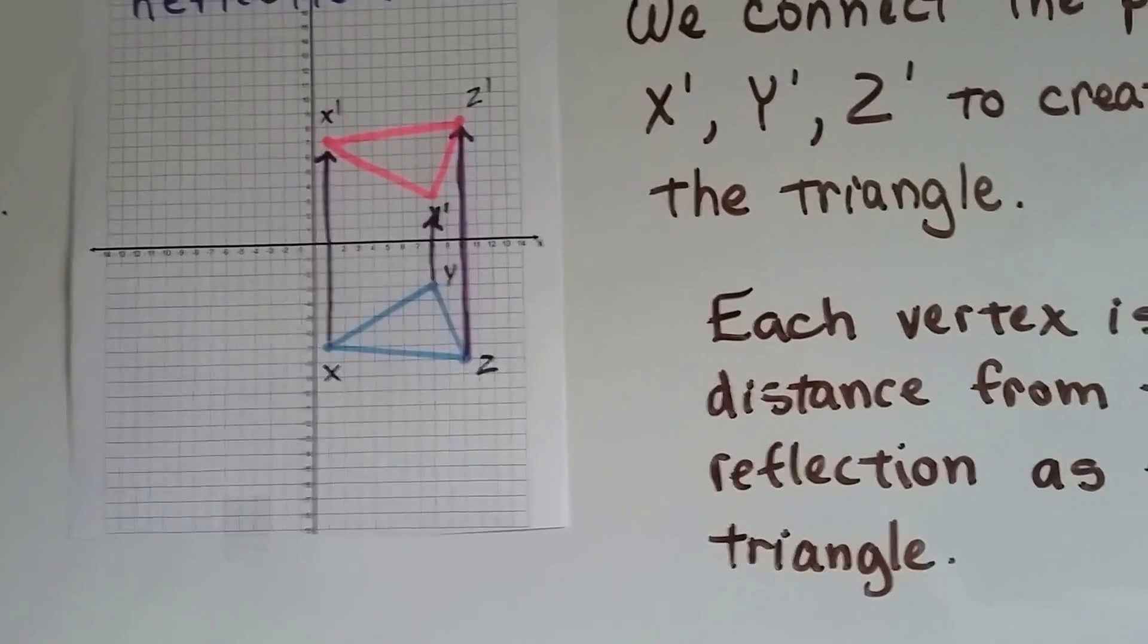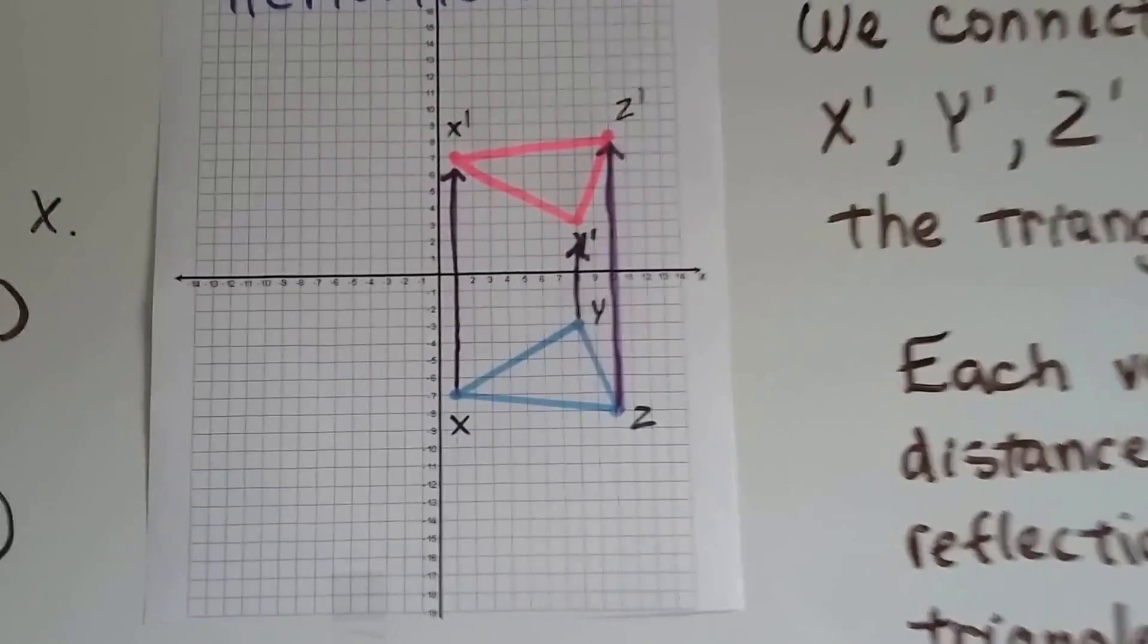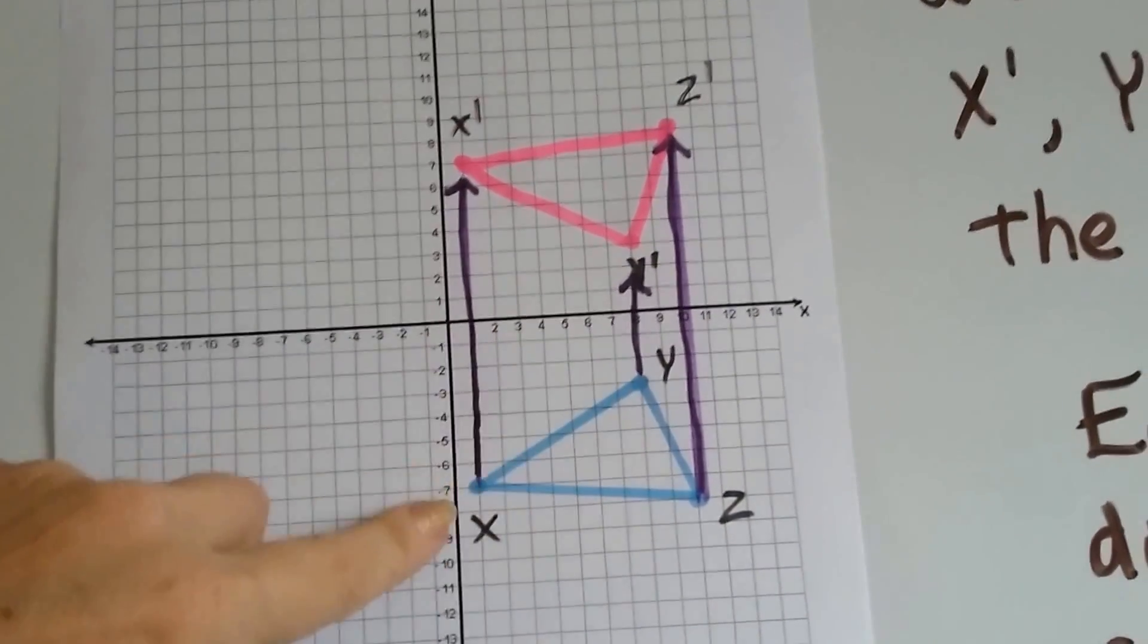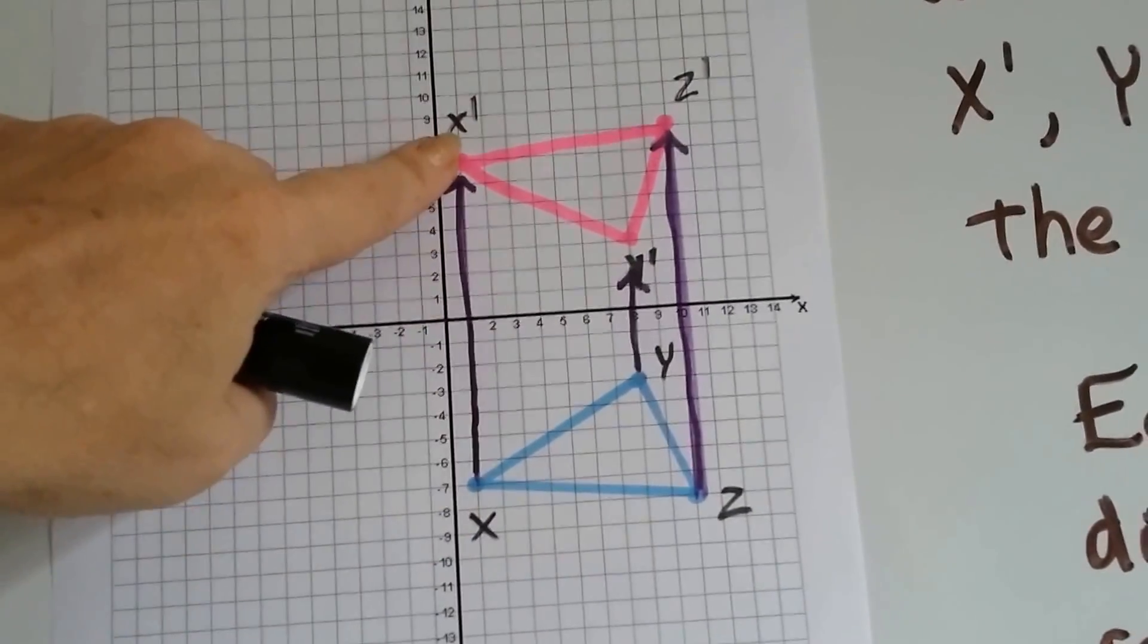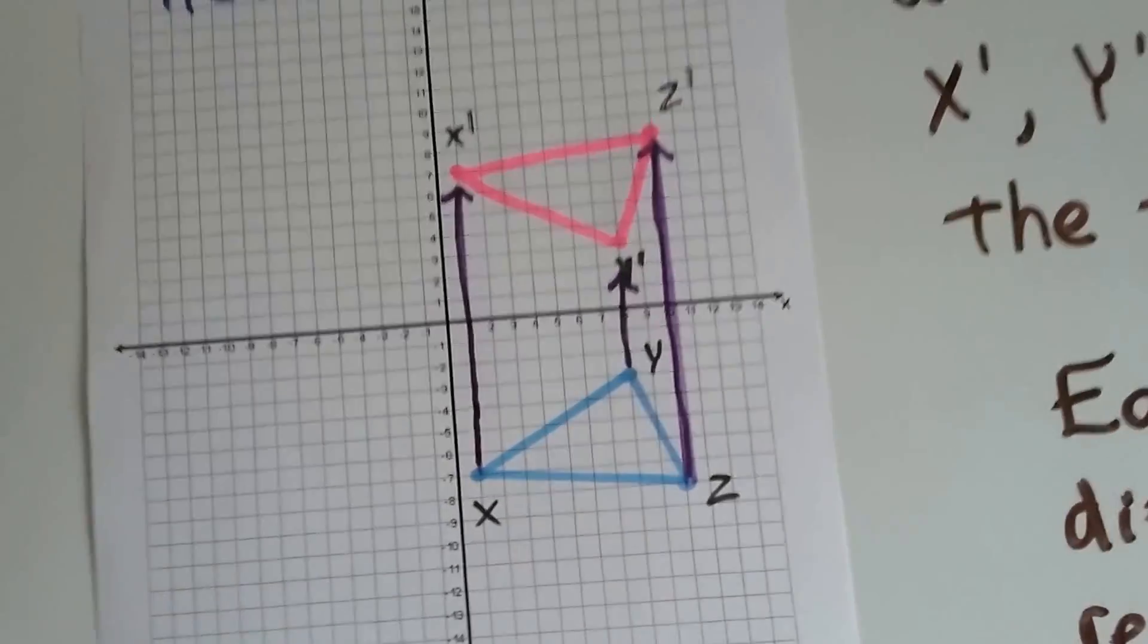So each vertex is the same distance from the line of reflection as the original triangle. Now look at the guiding lines that I've got here. It brought this point up to here. It brought this point to here. And it brought this point way up to here.